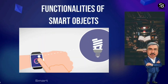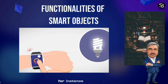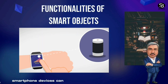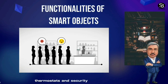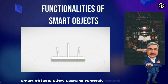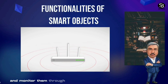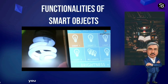Automation: Smart objects excel in automation. For instance, smart home devices can independently manage lighting, thermostats, and security systems. Remote control: Smart objects allow users to remotely control and monitor them through mobile apps or web interfaces.